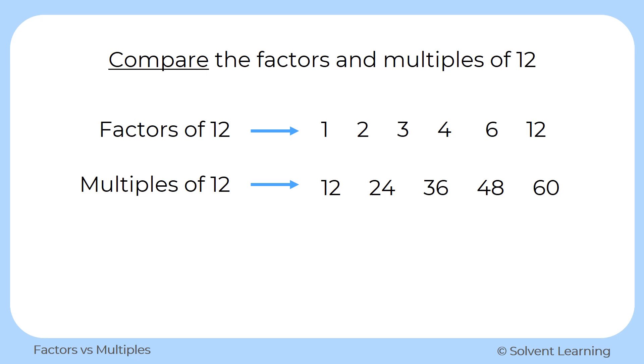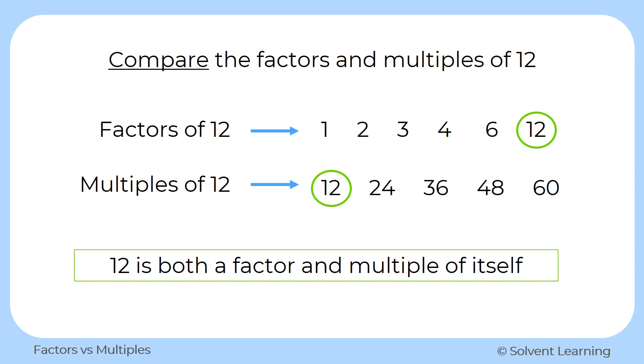So now we want to compare. We want to see what similarities they have. If we look at the list of the factors and multiples, they both include the number itself, the number 12. So we can say that 12 is both a factor and a multiple of itself.